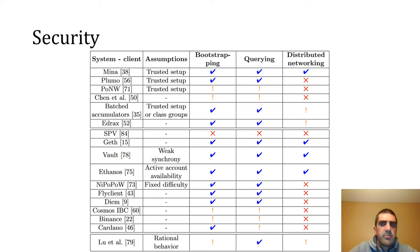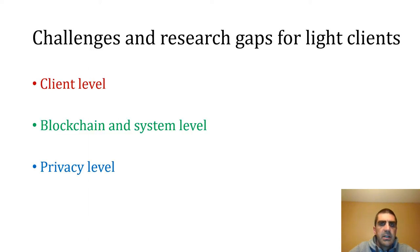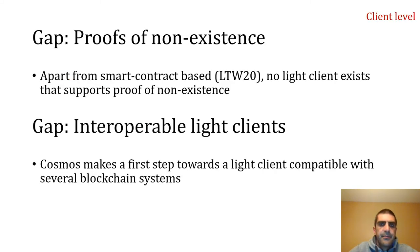Now we have all these systems and light clients — are we there yet? And if not, what elements or properties are still missing? I present here some challenges and gaps in three different categories: client level, blockchain and system level, and privacy level. At a client level, the first observation is that we don't have a proof of non-existence for a light client. For example, a client might query whether a specific transaction exists or not, and require a proof in both cases. The only system that can do this today is the one using a smart contract as an intermediary between the client and the full node — basically a trick to circumvent the trust assumption — but other systems do not support it.